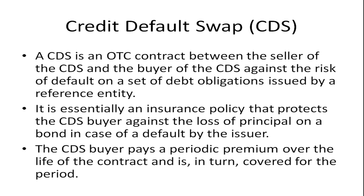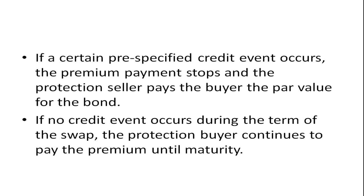The CDS buyer pays a premium, just like you would in an insurance contract, over the life of the contract while it is covered for that period. So it's really an insurance policy. If a certain pre-specified credit event occurs, the premium payment stops and the protection seller pays the buyer the par value of the bond.